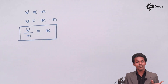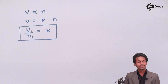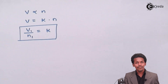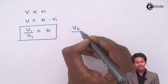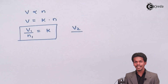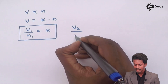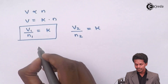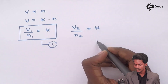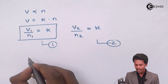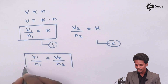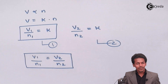For example, if a particular gas has a volume of V₁, then the number of moles of that gas would be n₁, and V₁/n₁ = K. If another state of the same gas has a different volume V₂, then V₂/n₂ = K. Taking these as equation 1 and equation 2 and equating both, we get V₁/n₁ = V₂/n₂. This is Avogadro's Law.